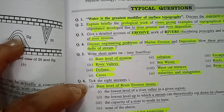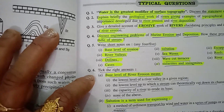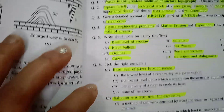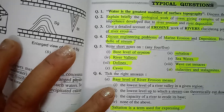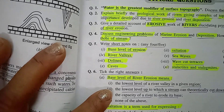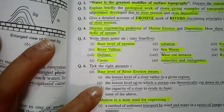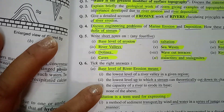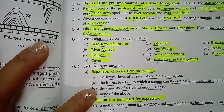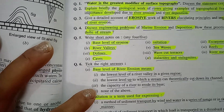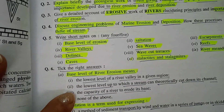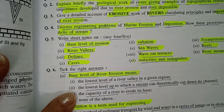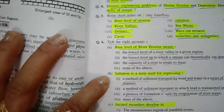Question six: tick the right answer. Question A: 'Base level of river erosion means?' Options: first, the lowest level of a river valley in a given region; second, the lowest level up to which streams can theoretically cut down their channel; third, the capacity of river to erode its base; fourth, none of the above. Answer: second — the lowest level up to which streams can theoretically cut down their channel.